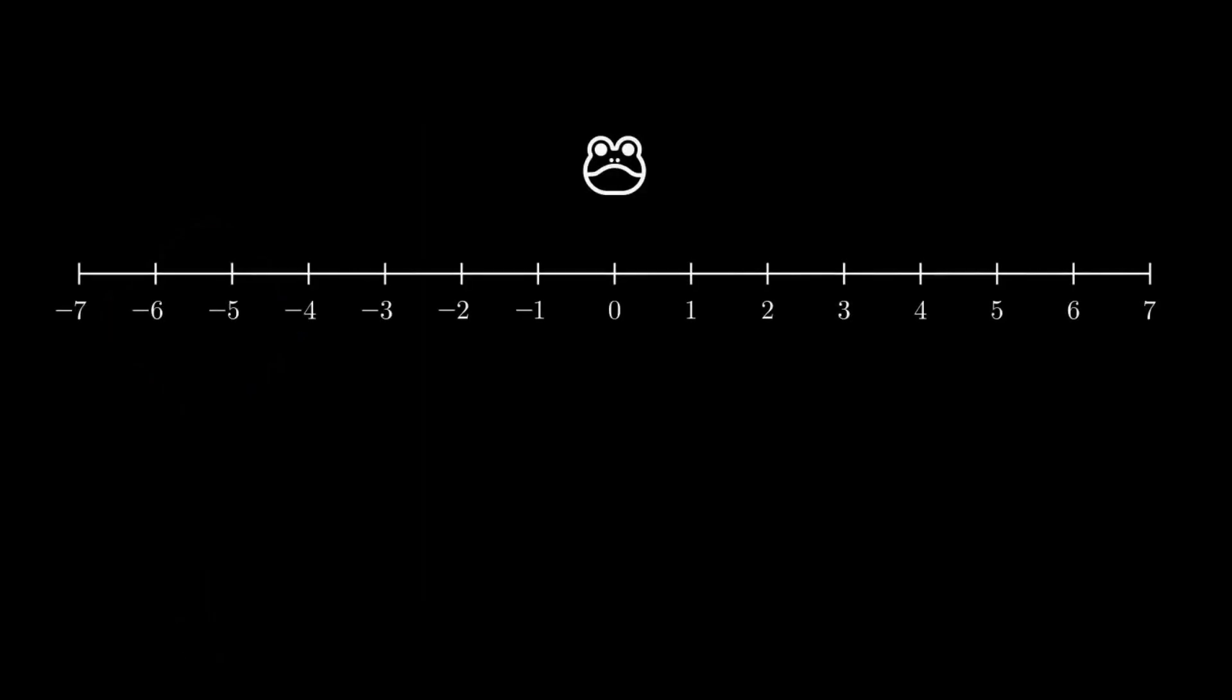A frog is located at the origin on an infinite number line. On the first jump, it can jump one unit to the right or to the left with equal probability. Let's assume it jumps to the left. On the second jump, it can jump two units to the right or to the left with equal probability. Let's assume it jumps to the right.